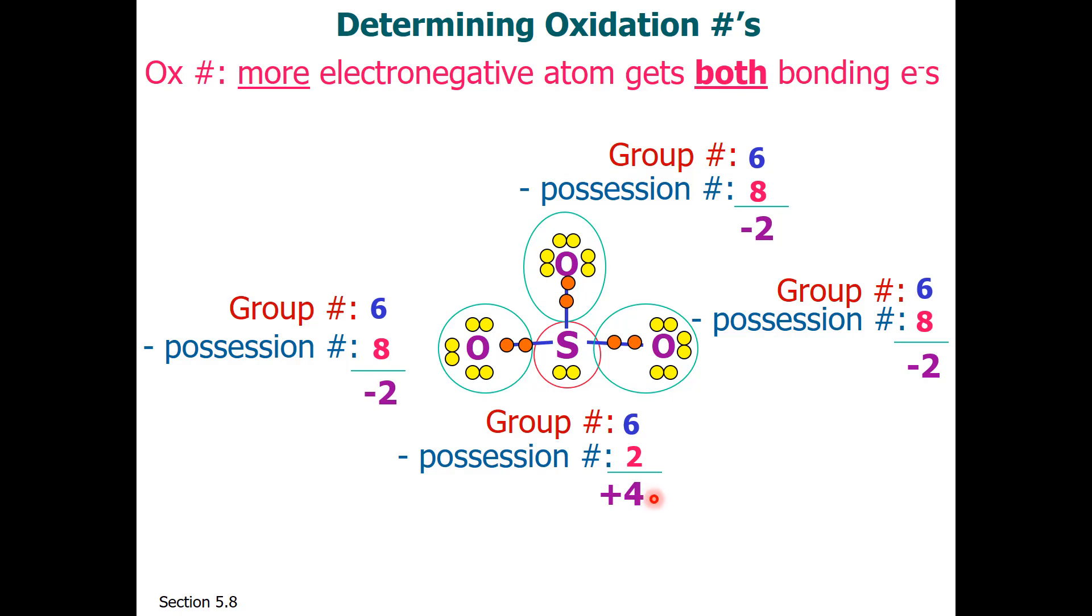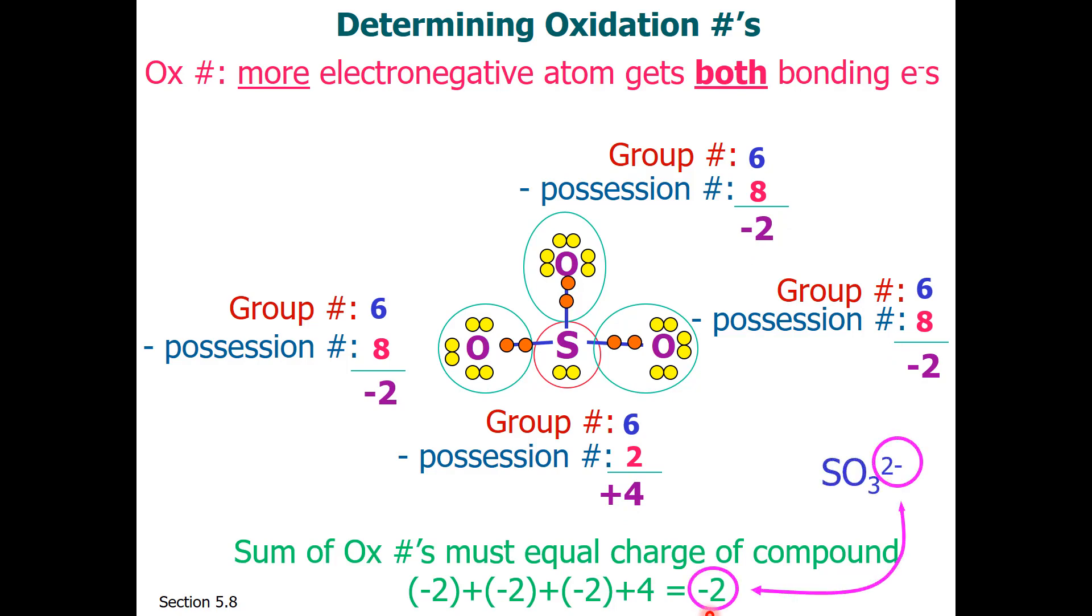That is the same answer you would get if you were given the sulfite ion and asked to get the oxidation state of sulfur in that compound. Just like formal charge, the sum of the oxidation numbers must equal the charge of the compound. So minus 2, minus 2, minus 2, plus 4 adds up to minus 2, which is the charge on the sulfite ion.